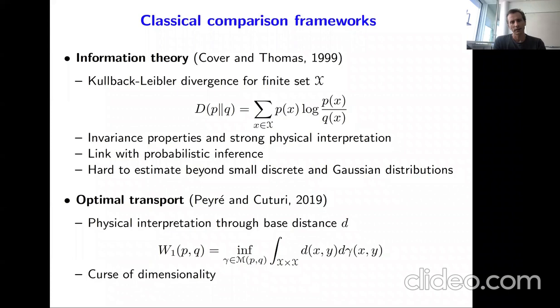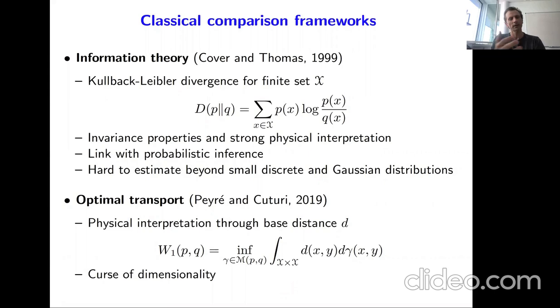The second framework is optimal transport. The W1 distance is defined via a coupling between distributions p and q — a joint distribution with marginals p and q — that minimizes expected distance. You can refer to the book by Gabriel and Marco. You get a nice physical interpretation through the base distance, but again you often face a curse of dimensionality in terms of sample complexity, and computing it in higher dimensions is challenging.